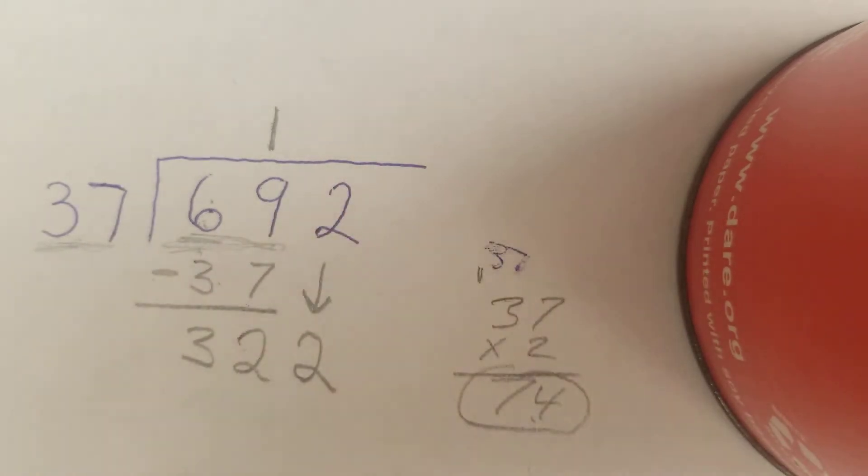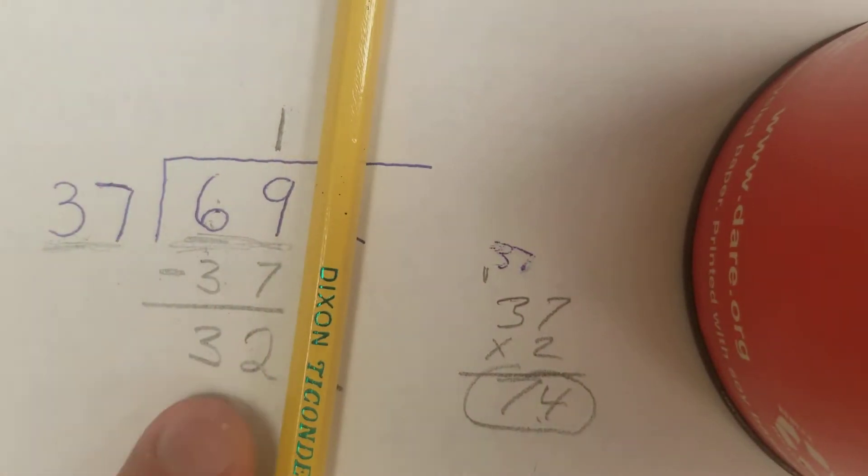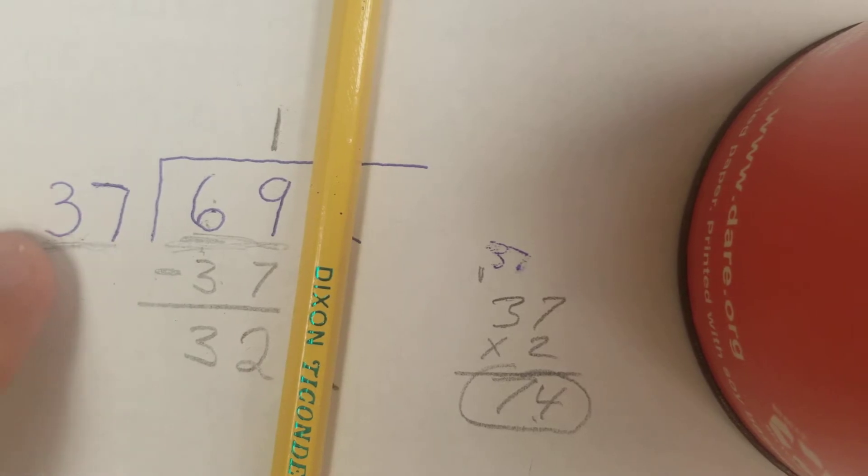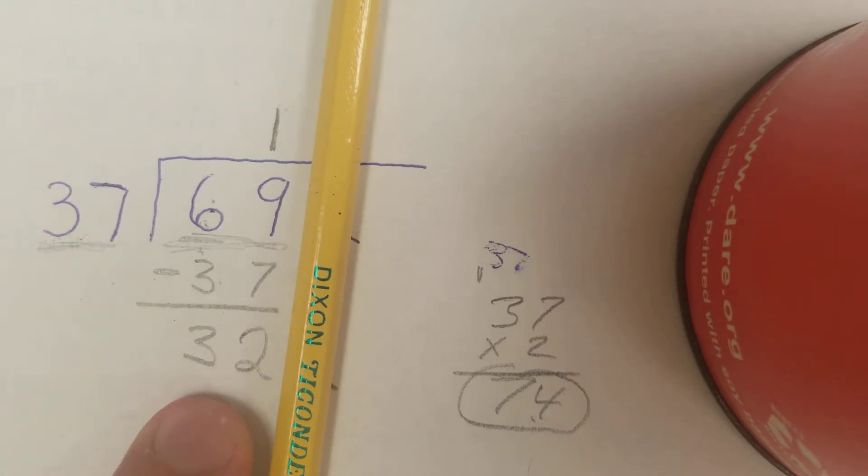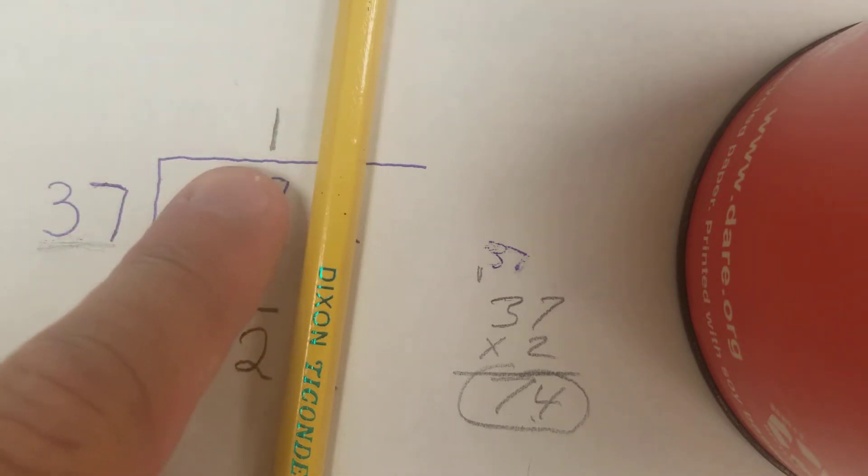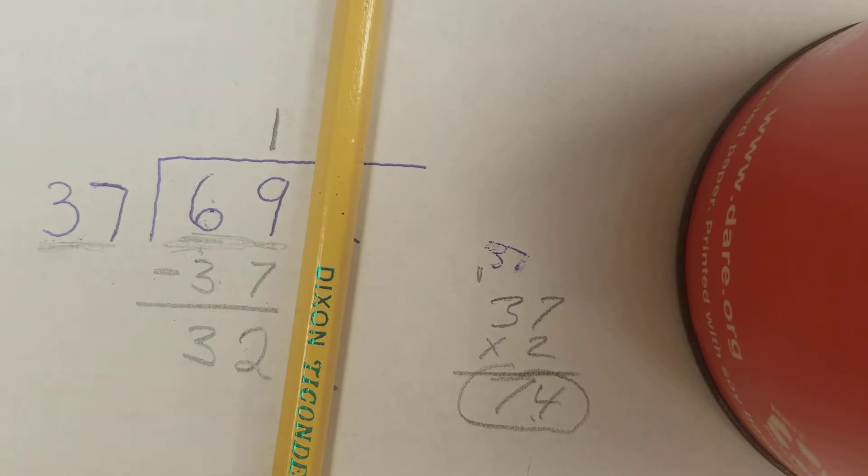One thing to pay attention to before you bring down that 2: you see how my remainder is 32 and it is smaller than 37. That means I'm good to go because 37 would not go into this. If you subtract and your remainder is larger than whatever you're dividing by, this number wouldn't be big enough. So we brought down our 2.